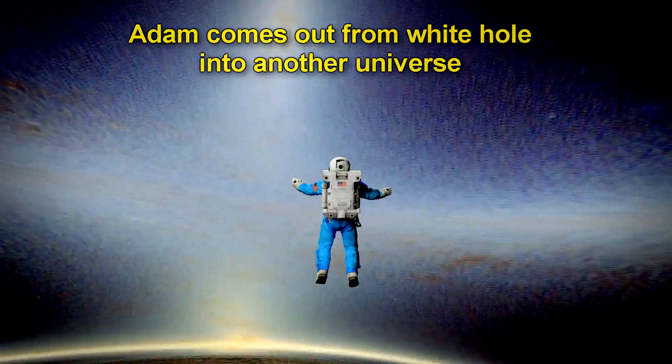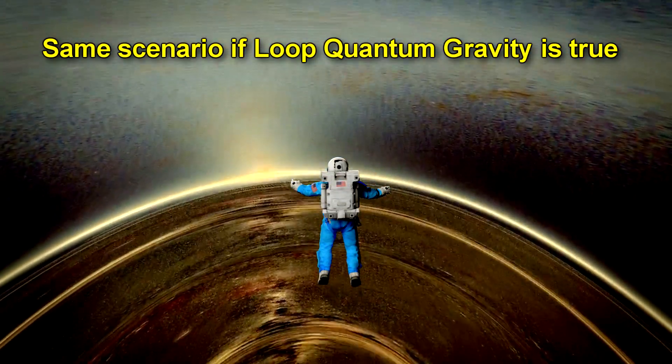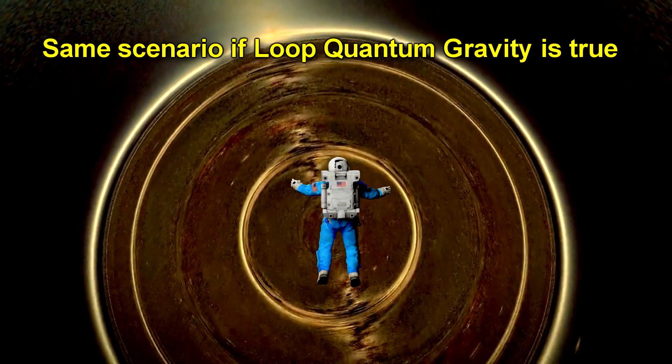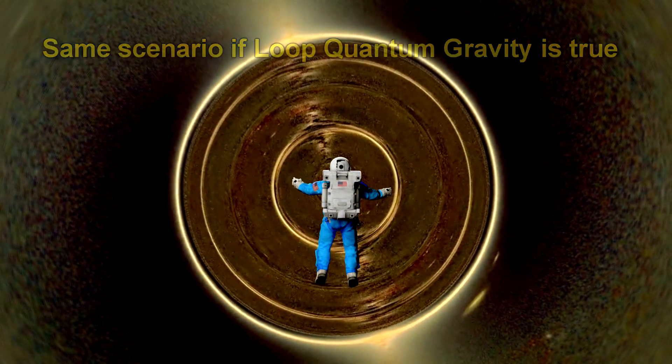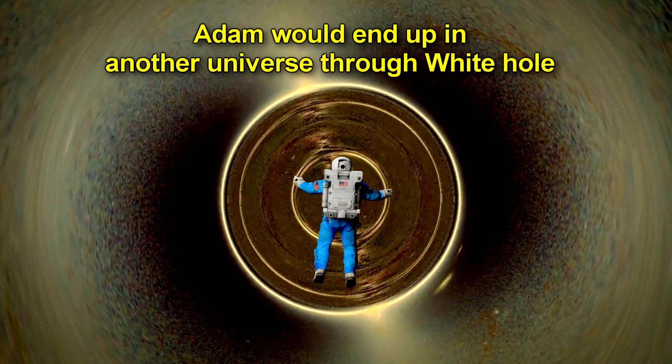And in the second case, if the theory of loop quantum gravity is correct, which is a competing theory to string theory, then there would be no singularity in the black hole at all. This case would be very similar to the rotating black hole except there would be no infinitely bright light. Adam would be transported to another universe through a wormhole. See my video on loop quantum gravity if you want to know more about what that theory is.